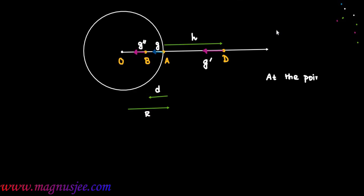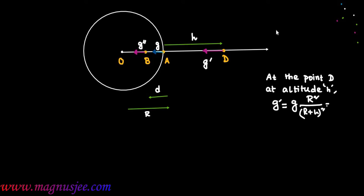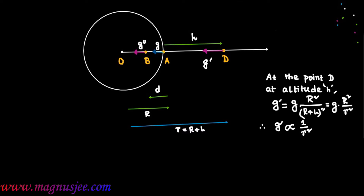At point D at altitude H, acceleration due to gravity is given by: G' = G·R² / (R + H)², which can also be written as G' = G·R² / r², where small r is the distance of point D from center O. Therefore G' is proportional to 1/r². The distance of point D from center O is small r = R + H.